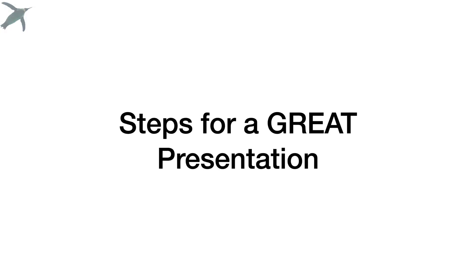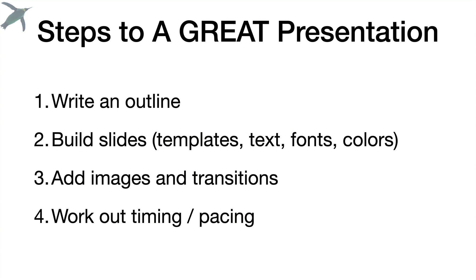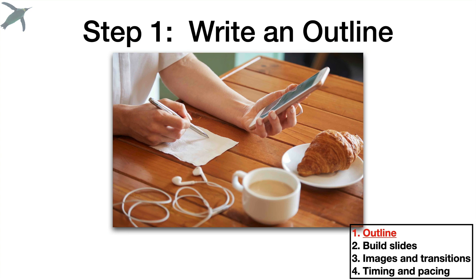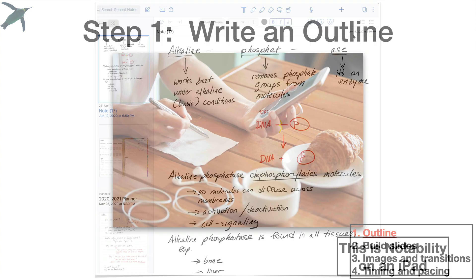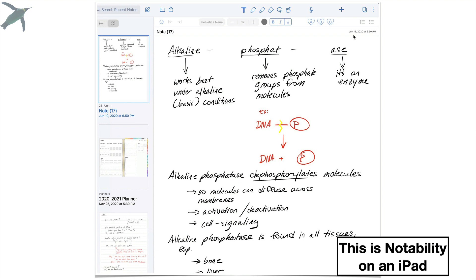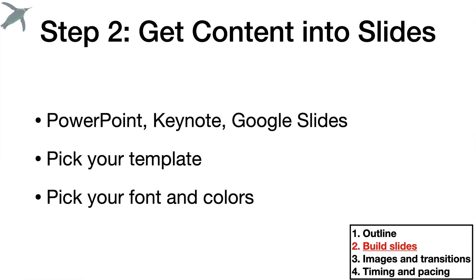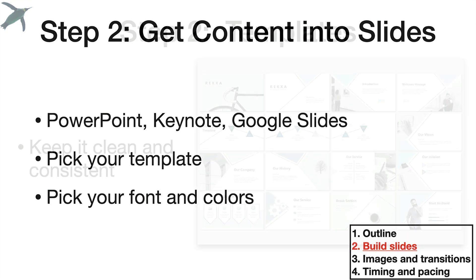Let's talk about steps for a great presentation. There are four and I'm really only going to talk about steps two, three, and four. The first one is writing an outline — you're an educator, you probably already have your tools for this. I personally use Notability on an iPad, but use whatever you like. Getting content into slides: you're going to pick what kind of slide deck and software you want to use, pick a template, and then we'll talk about fonts and colors.